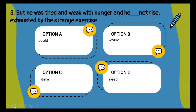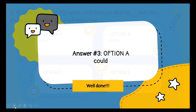The third type of question is again a fill-in-the-blank, and you have to fill in the blank with modals. The sentence goes: 'But he was tired and weak with hunger and he dash not rise, exhausted by the strange exercise.' The correct answer would be could, because he was tired. He could not rise.